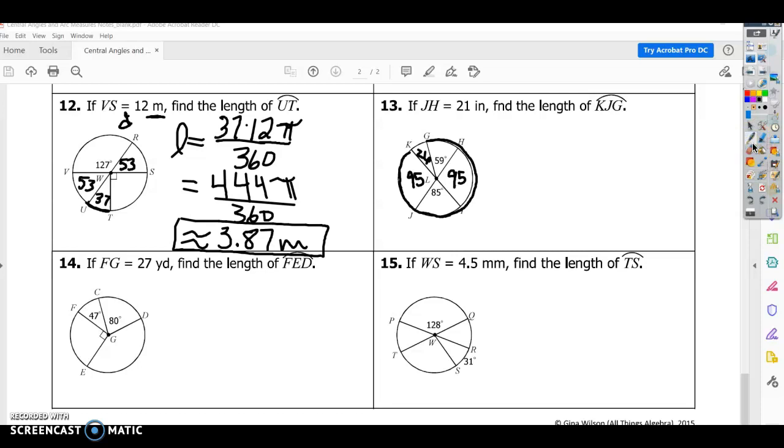For number 13, it gives us JH. JH, again, is the diameter. And it says find the length KJG. So this is a major arc, means it's above 180, and you always follow the letters in the order they are. So K, J, and G. So you bypass these other letters, it doesn't matter. But the arc KJG is everything in the circle except that 26. So we're going to have an arc length. Our X is going to be 360 minus 26, which is 334, times our diameter pi. So 21 pi divided by 360.